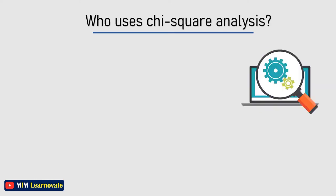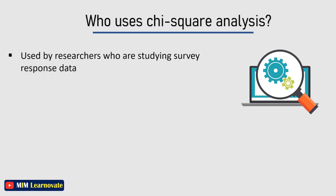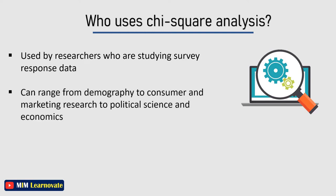Who uses chi-square analysis? Since chi-square applies to categorical variables, it is most used by researchers who are studying survey response data. This type of research can range from demography to consumer and marketing research, to political science and economics.